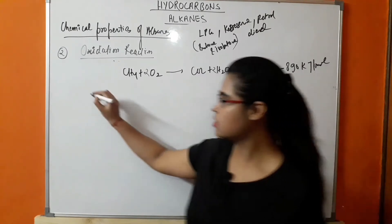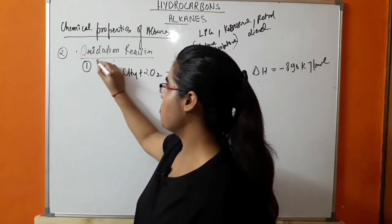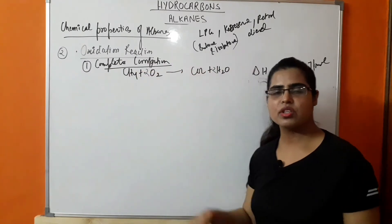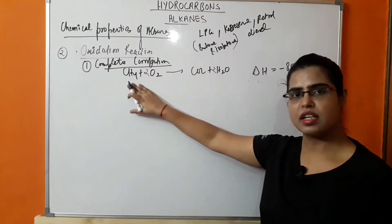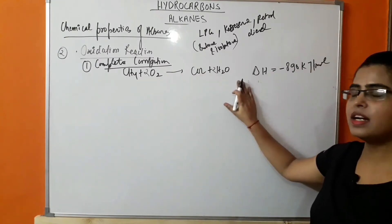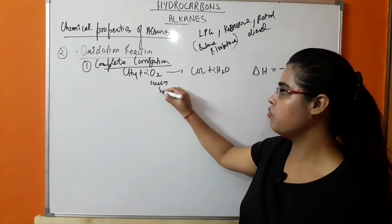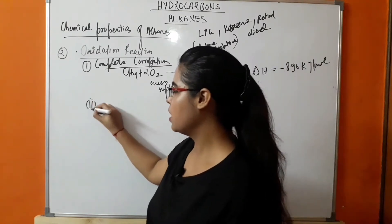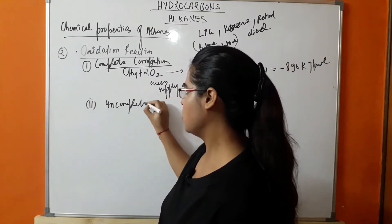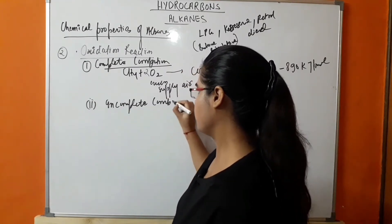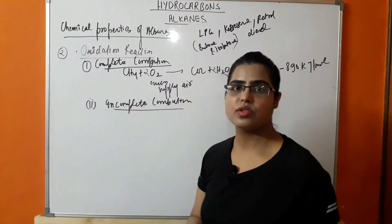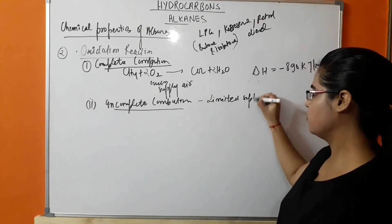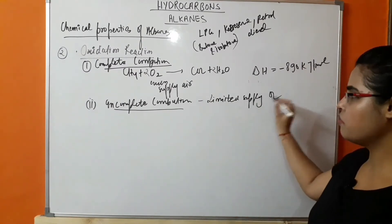The first type is complete combustion, where methane is completely converted into CO2 and H2O in excess supply of air. The second type is incomplete combustion, which occurs in the presence of a limited supply of air.